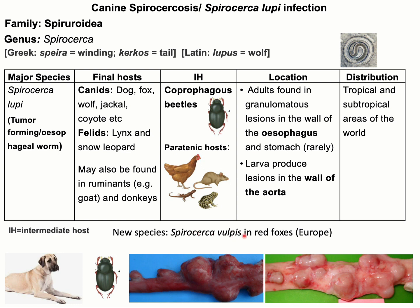Recently, a new species — Spirocerca vulpis — has been recorded in red foxes in Europe. This parasite is genetically different from Spirocerca lupi. The disease caused by this parasite is called canine spirocercosis or Spirocerca lupi infection.